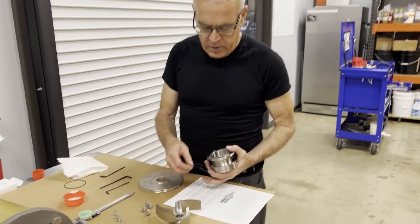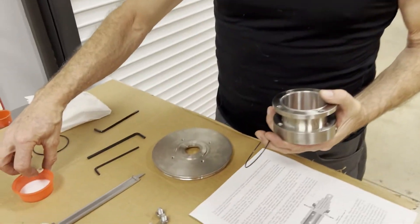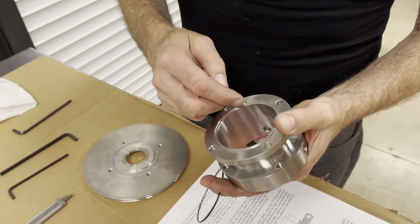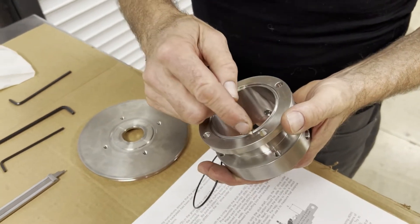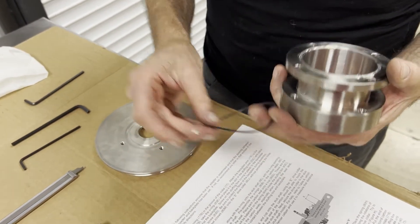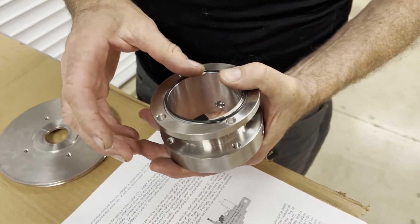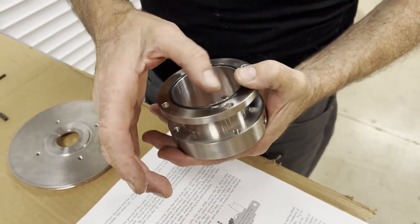We're going to start by putting this O-ring into the stuffing box. I'm going to use a little bit of the grease to help hold that in - a little bit of edible grease.